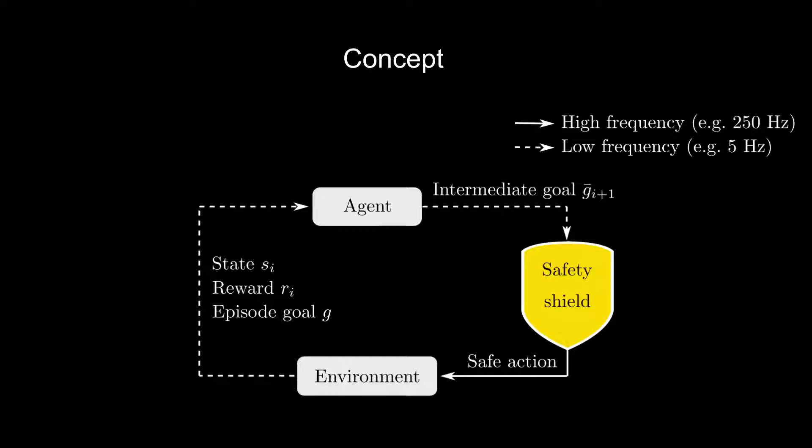To achieve this strong safety criterion while still being able to maneuver close to humans, we need to verify the robot trajectory at a high frequency. Our reinforcement learning agent, however, outputs actions at a low frequency to make long-term decisions like moving around a human to reach its goal. Combining a low frequency reinforcement learning agent with our high frequency formal verification leads to effective path planning in highly dynamic scenarios while being safe at all times.